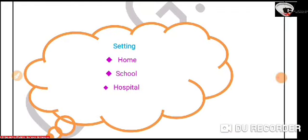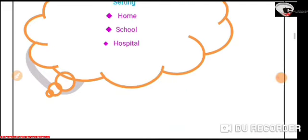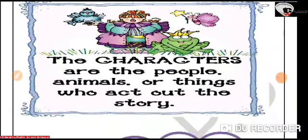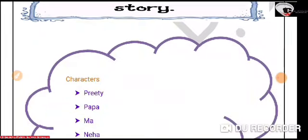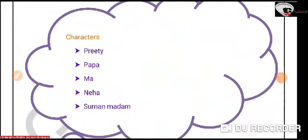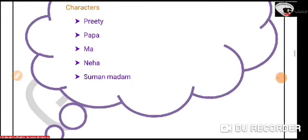Next comes the setting. The setting means the time and the place where the story occurs. In this story, the settings are home, school and the hospital. Next come the characters — the people, animals or things who act out the story. The main characters in this story are Preeti, Papa, Maa, Neha, Suman Madam and some of Preeti's friends.